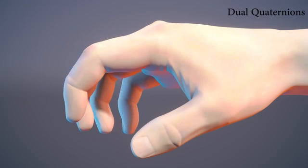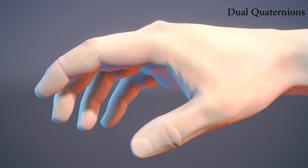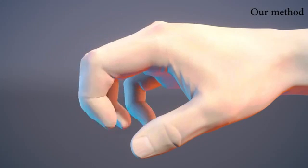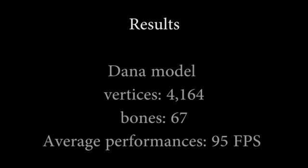We now present several models with complete animations skinned with our method. The number of bones and vertices of the models as well as the average frame rates are given at the beginning of each animation. Each animation includes a comparison between our method, linear blending, and dual quaternions.